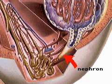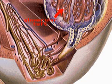The kidneys filter unwanted materials from the blood and regulate the levels of water and chemicals in the body. As blood flows through a glomerular tuft, a tight knot of blood capillaries from which water and chemicals filter into the nephrons, fluid is forced into the Bowman's capsule.